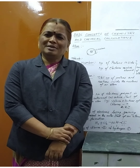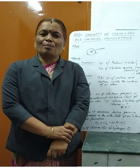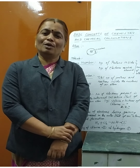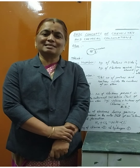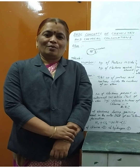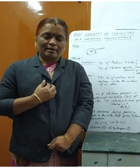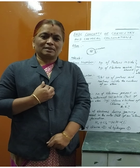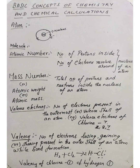Before going to discuss the lesson, let's review some basic things about Chemistry you learned in lower classes. What is meant by Atom? Atom is the smallest particle of an element that can take part in a chemical reaction. According to the modern atomic theory, atom is a divisible one.